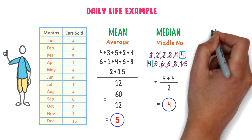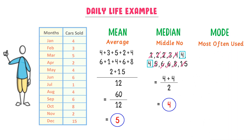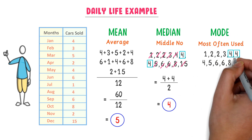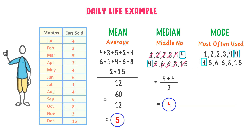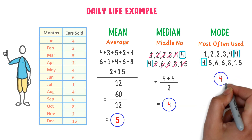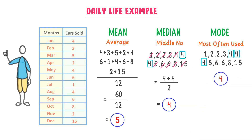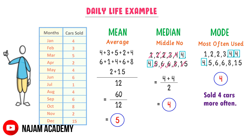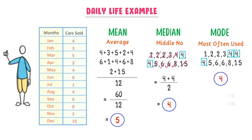Thirdly, mode is the most often used number. We can see that 4 is repeated 3 times, so 4 is the mode of this data set. It means that Mr. Tom sold 4 cars for 3 consecutive months — we can say that he sold 4 cars more often. By this way, we can easily understand the selling picture of cars in a year. I hope that you have learned all about mean, median and mode.